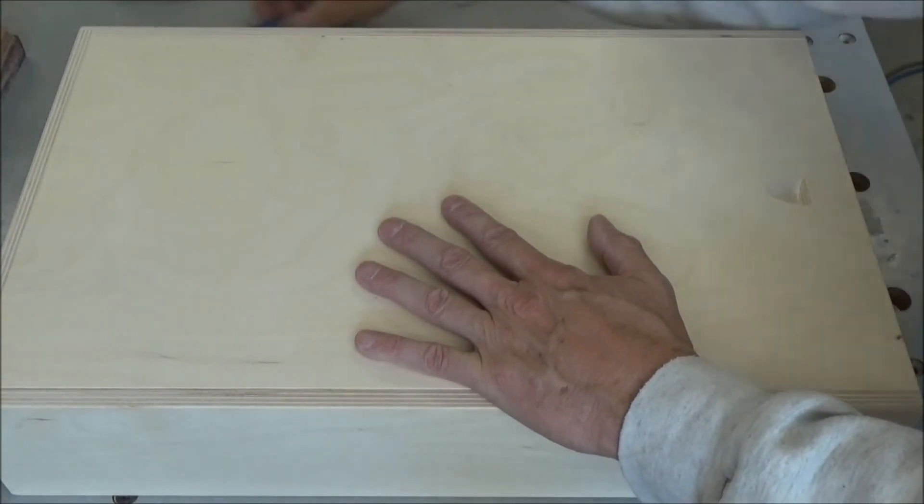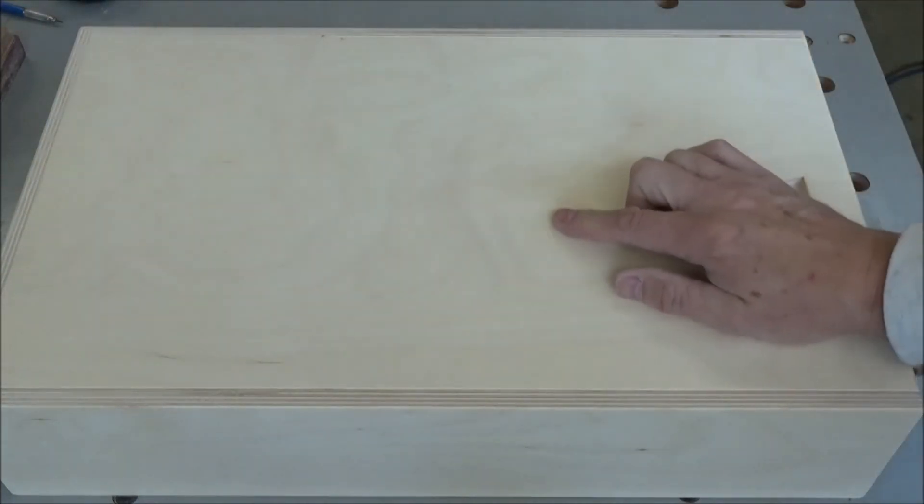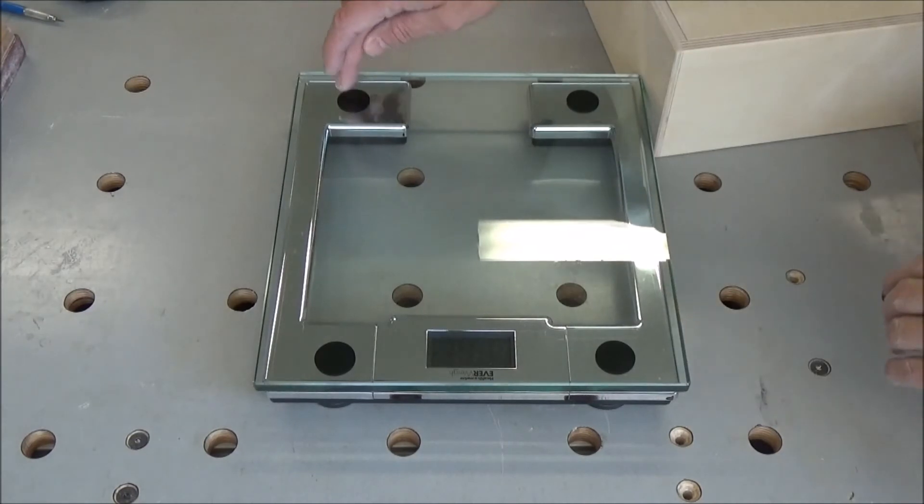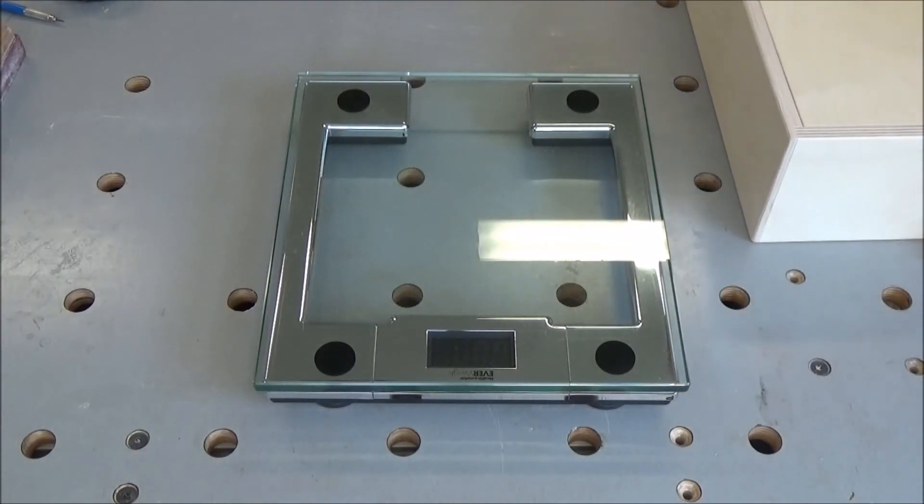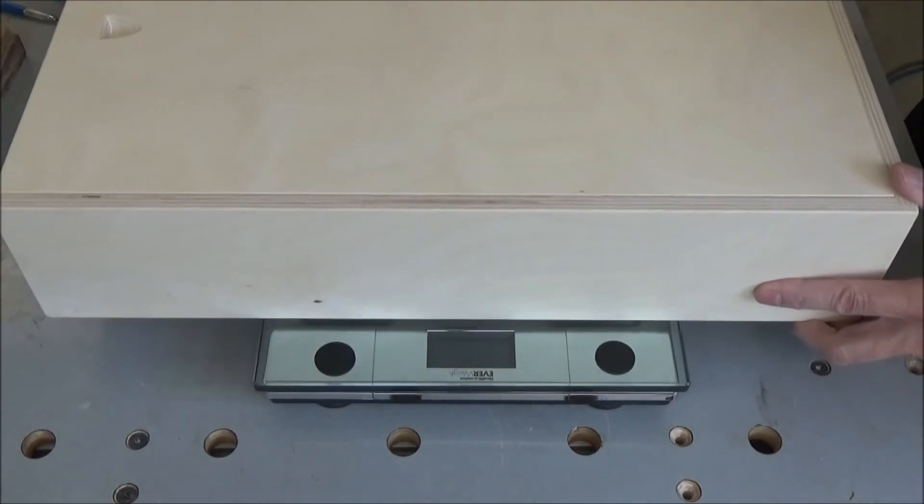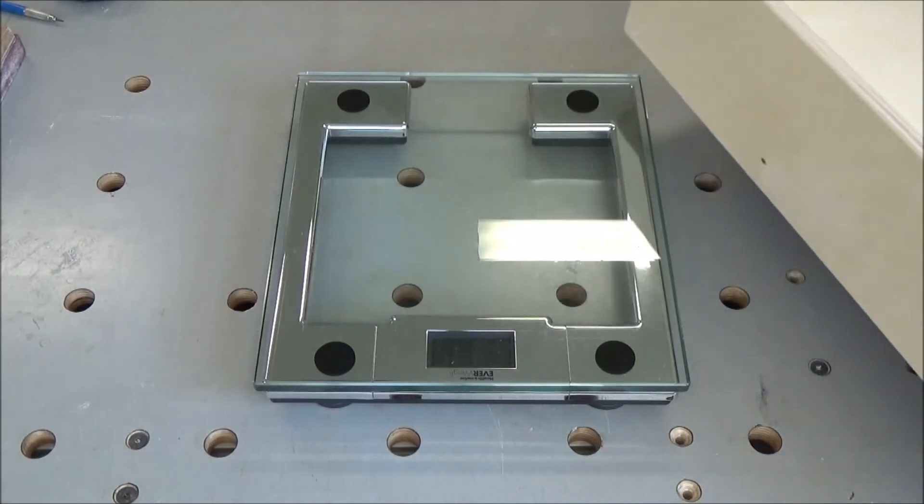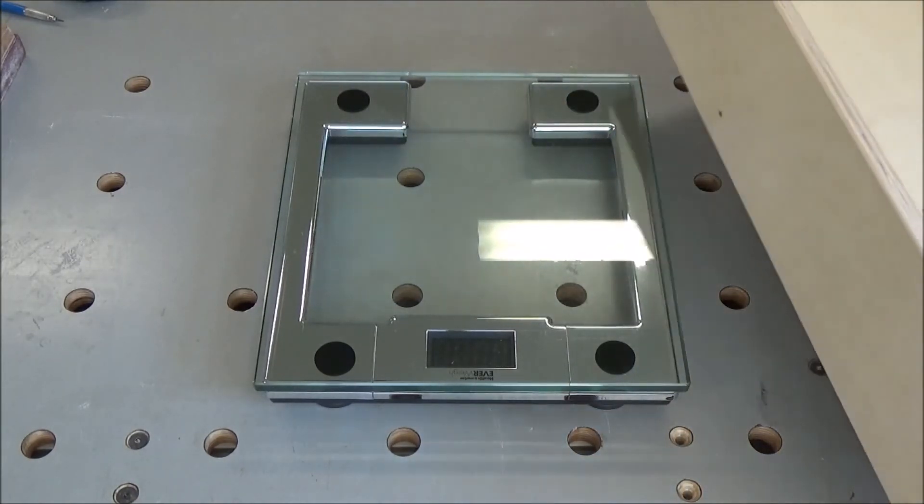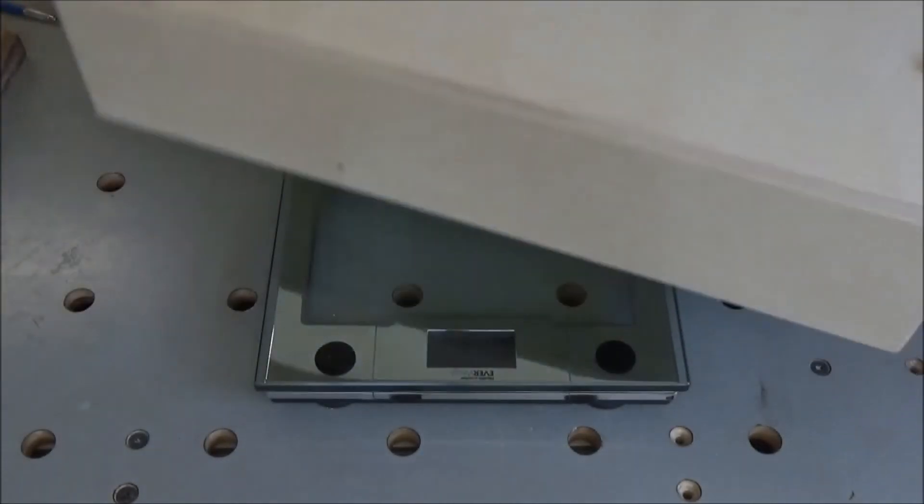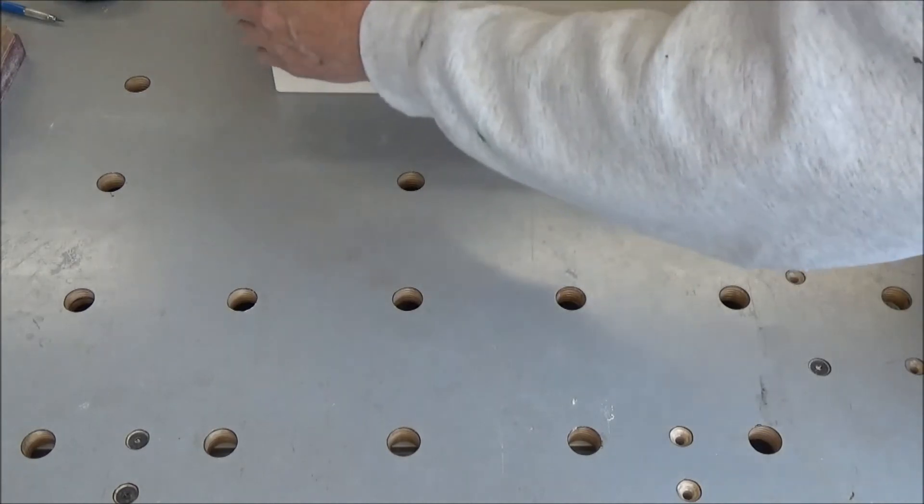Now this thing does have a pretty good weight to it, and I do want to see how much that is. So I'm going to get my bathroom scale down here. I'll put it on the scale and see what the combined weight of everything is. Let me just put it on here and see what she says. 31 and a half pounds. Try it one more time, make sure I've got an accurate weight. Yep.